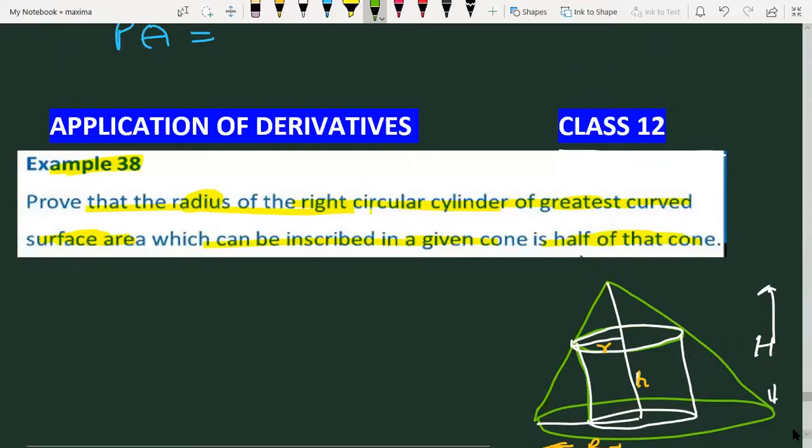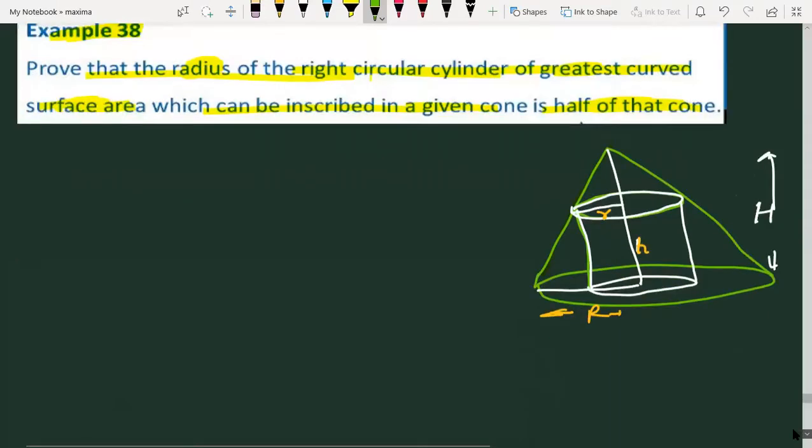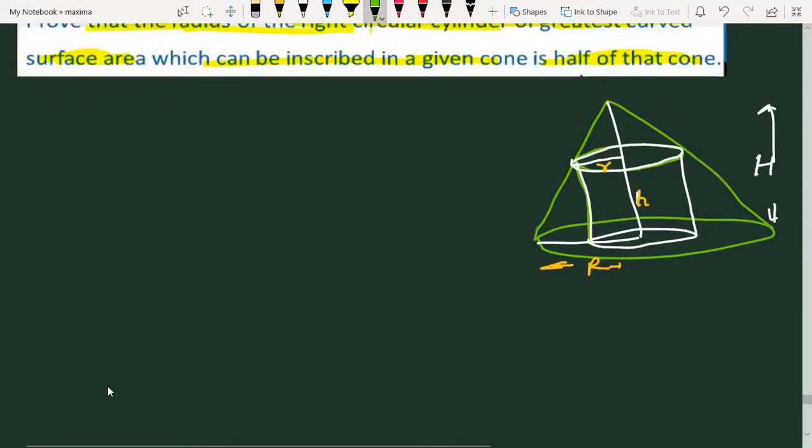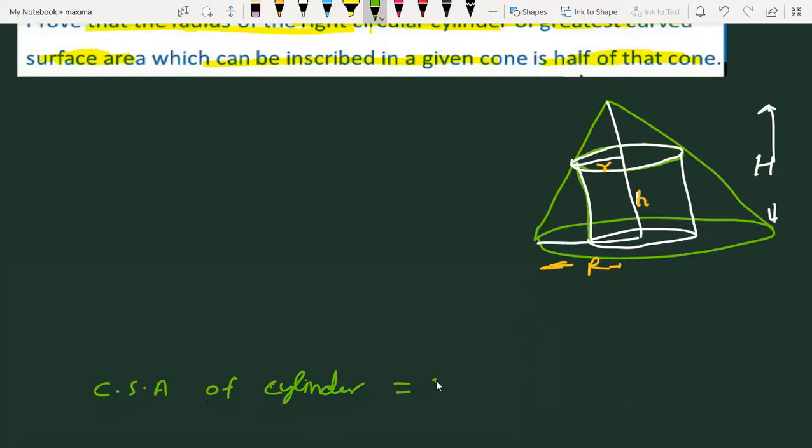This is the CSA of cylinder. We have to find the CSA of cylinder. How much is the CSA of cylinder? The CSA of cylinder is 2πrh.